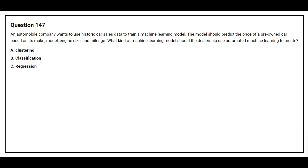Question number 147. An automobile company wants to use historic car sales data to train a machine learning model. The model should predict the price of a pre-owned car based on its make, model, engine size, and mileage. What kind of machine learning model should the dealership use automated machine learning to create? Option A: Clustering. Option B: Classification. Option C: Regression. The correct answer is Option C, Regression.